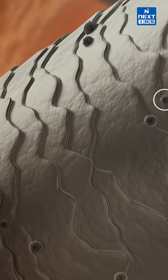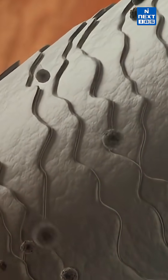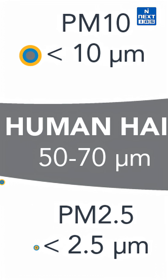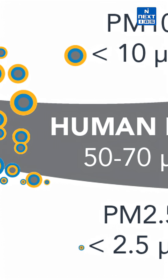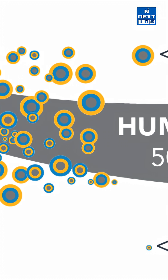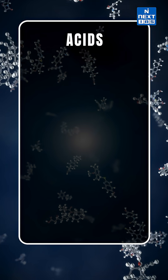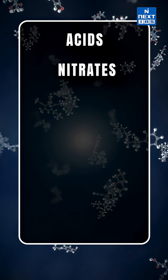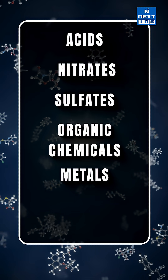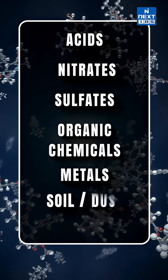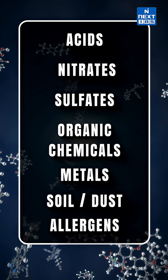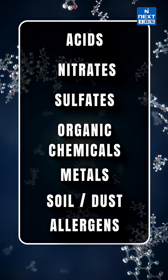That means PM 2.5 is even 20 to 30 times smaller than a human hair. Even particulate matter 10 is almost 5 to 7 times smaller than a human hair's diameter. PM 2.5 constitutes acids like nitrates and sulfates, organic chemicals, metals, soil, and allergens.